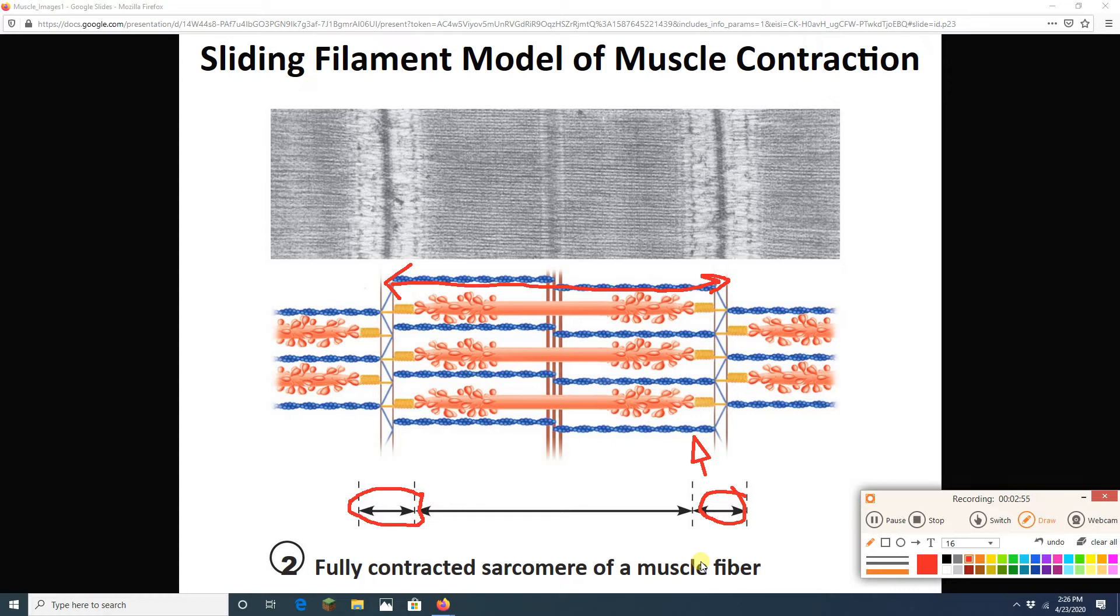This is called the sliding filament model because you have these two filaments that are basically going over one another. Now, here's the thing. Myosins grab onto actin and pull them inward. This makes the I-band get smaller, makes the H-zone get smaller, makes the distance between Z-discs get smaller. In other words, the sarcomere gets smaller.